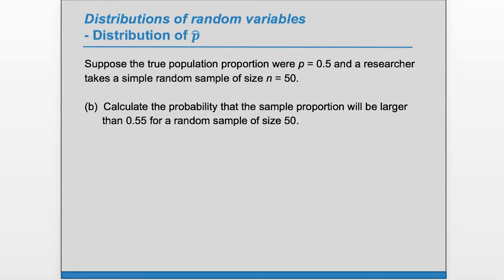Part B. Calculate the probability that the sample proportion will be larger than 0.55 for a random sample of size 50. So let's see. We want the probability that our sample proportion, p hat, will be bigger than 0.55.